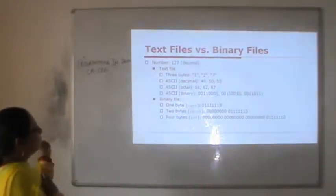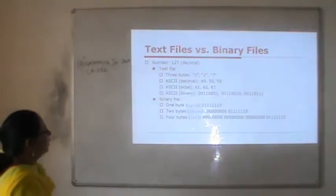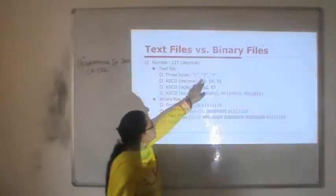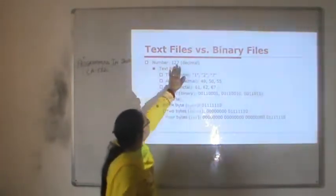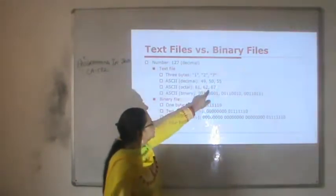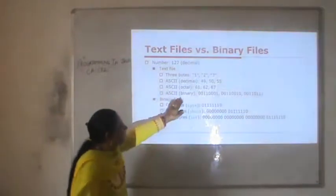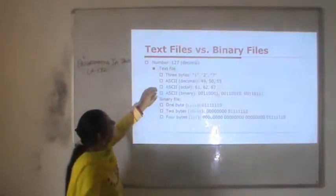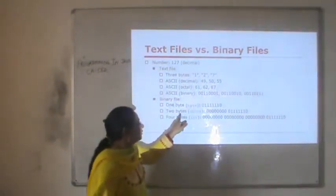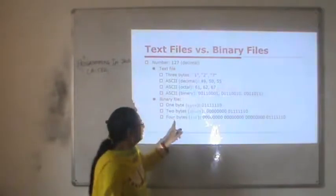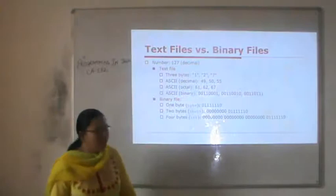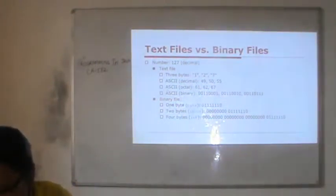For example, suppose we have the number 127. In a text file it will be represented as 3 bytes: 1, 2, and 7, with ASCII codes 49, 50, and 55, and in octal 61, 62, and 67. But in a binary file, the binary representation is stored — in case of 1 byte it is stored one way, in 2 bytes another way, and as an int it is stored in 4 bytes. So there is a difference in how data is stored.